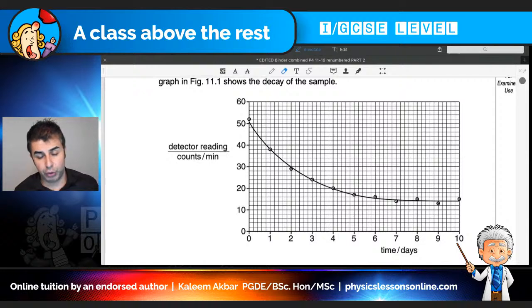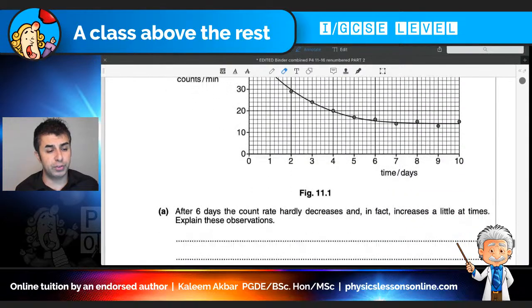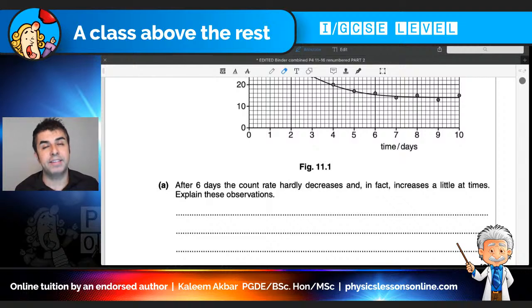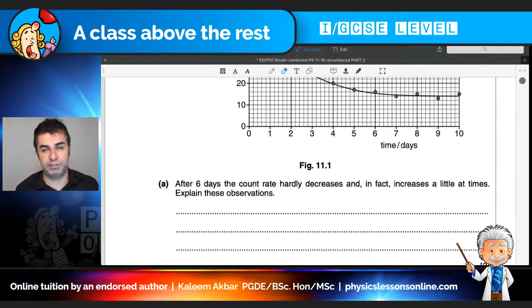So 52 and then around here, looking at 9 days it looks like it's a box and a half above 10, so it's 15. So let's go to the first question. After six days the count rate hardly decreases and in fact increases a little at times. Explain these observations.